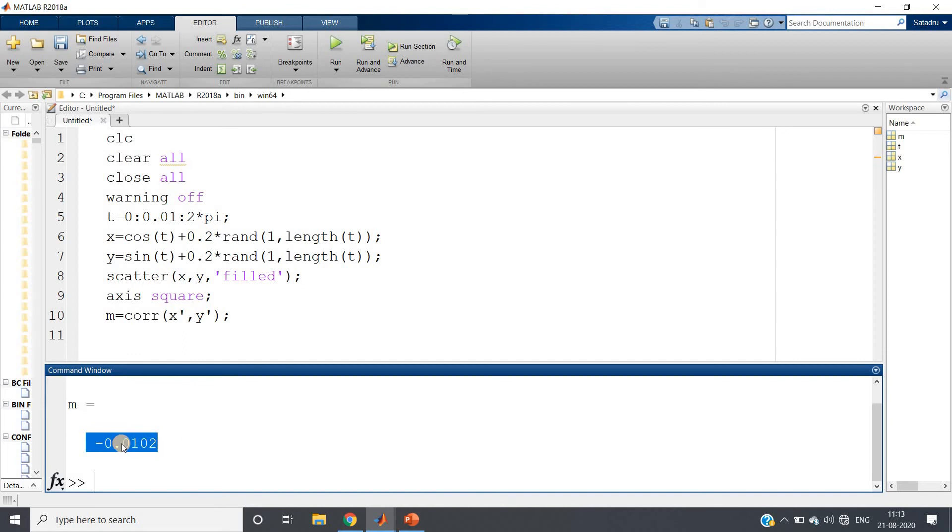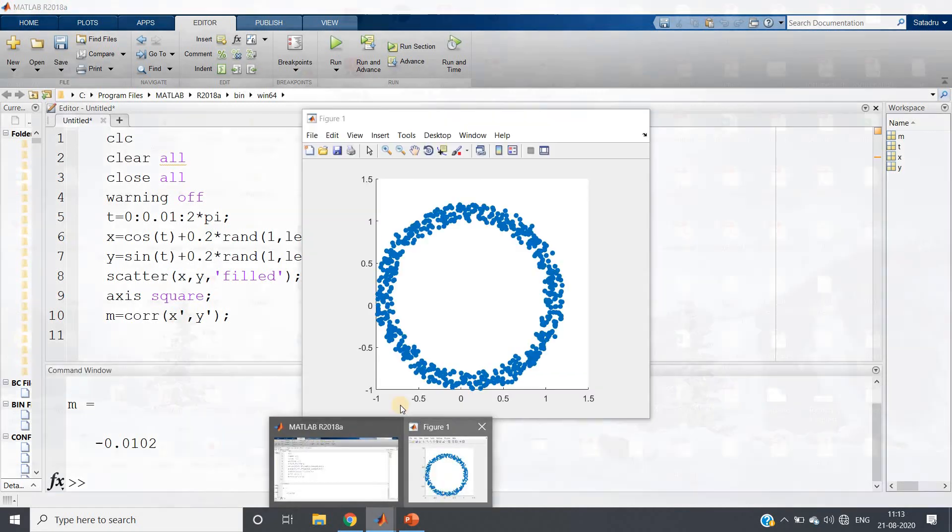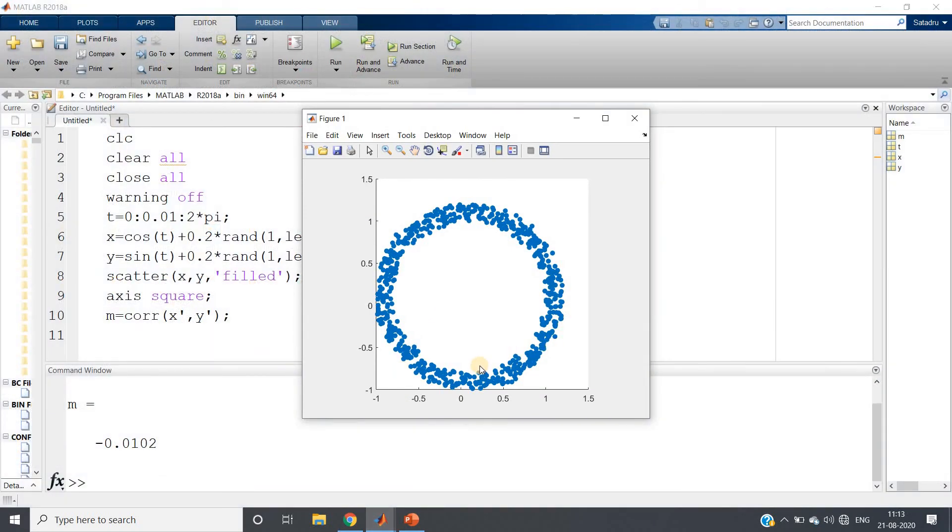It is very small value, approximately close to 0. So based on this, we might conclude that the two variables are not at all related, 0 correlation. But here we can see that the two variables are related. They are related using non-linear equation, not using linear relationship.